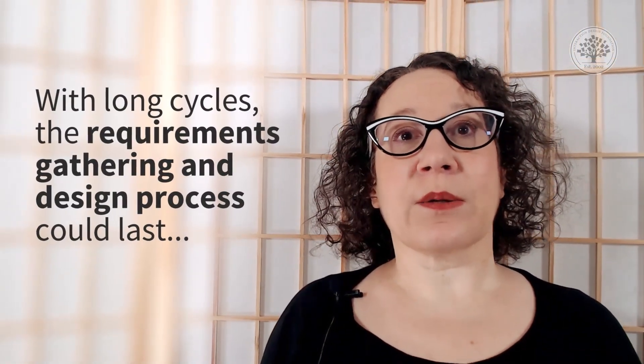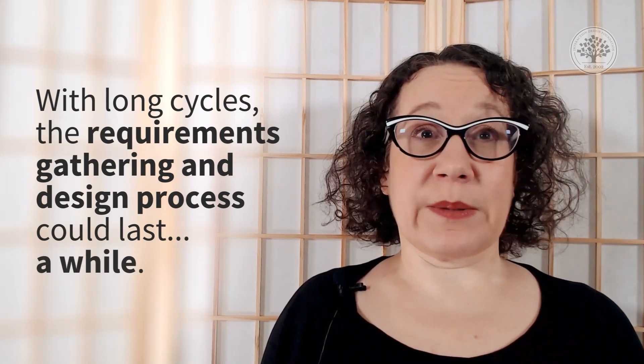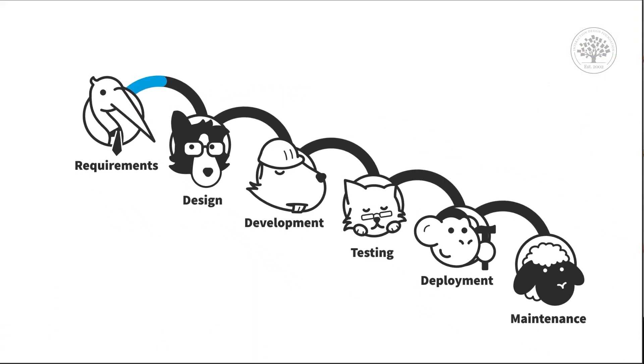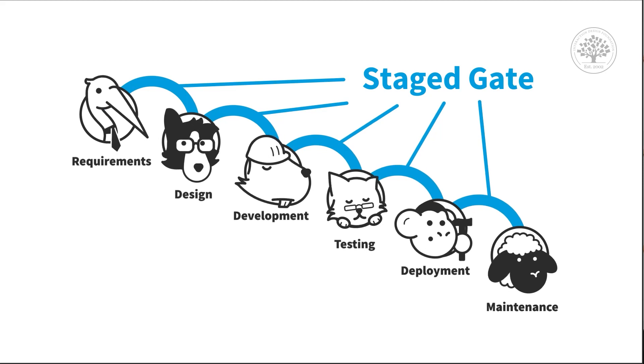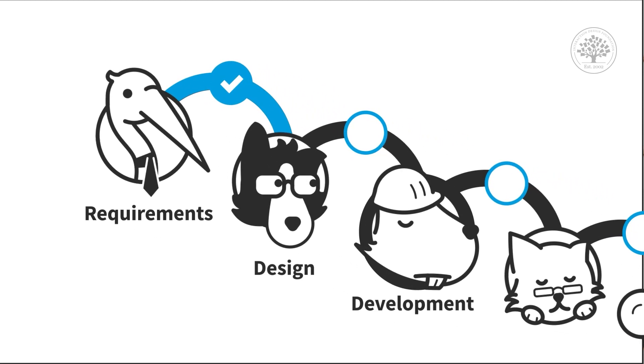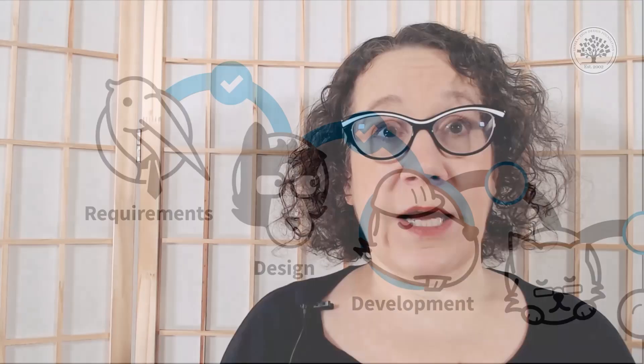With these long cycles, the requirements gathering and design process could last a while — almost always months, sometimes a year, depending on how big the product was. And a lot of times this was all before a single line of code got written. Each drop-off in waterfall is really what's called a staged gate, meaning after the process happened — the requirements document, the design, or whatever — there would be a review process of the output before it moved through the gate to the next step. Development couldn't happen before design ended because the design had to be fully vetted before resources were committed to building. After all, you wouldn't want to spend a lot of money writing code if everything was just going to change, right?